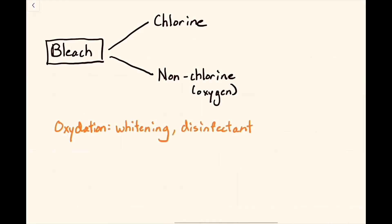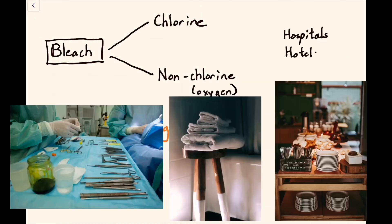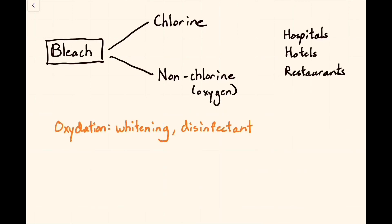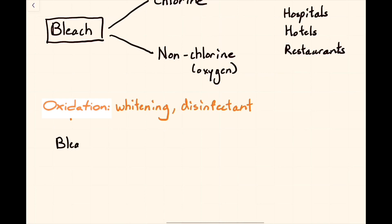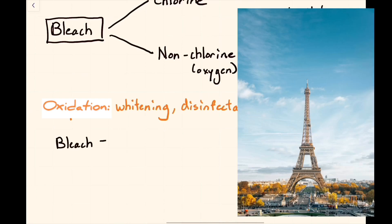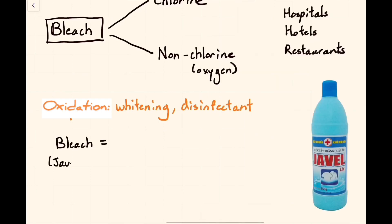Chlorine bleach is used as a disinfectant in hospitals, hotels, and restaurants. The first chemical bleach, sodium hypochlorite, was invented in France, and it was called Javel water.